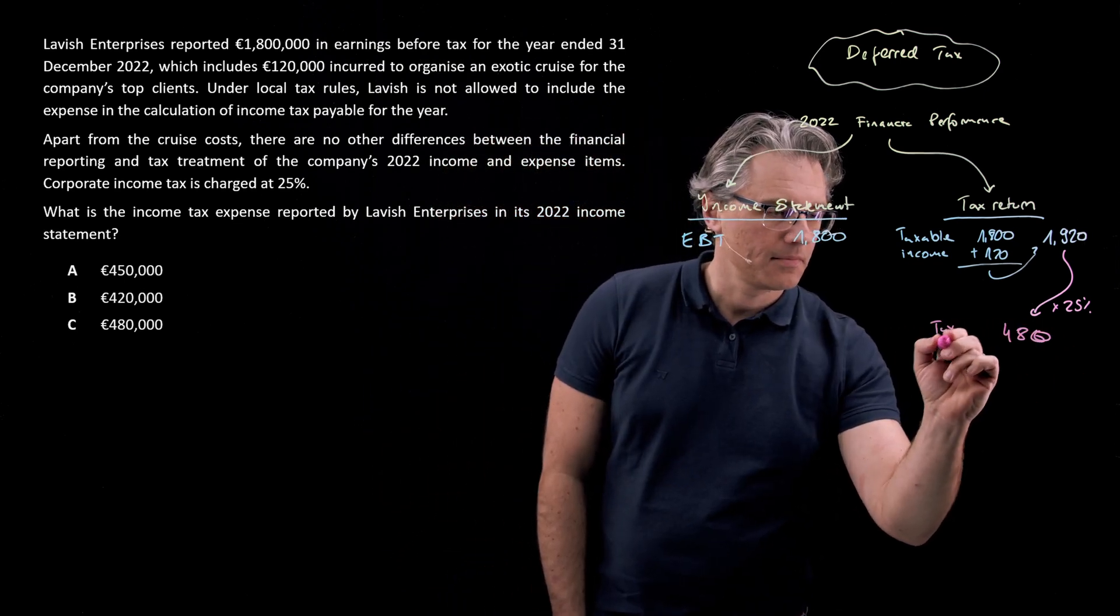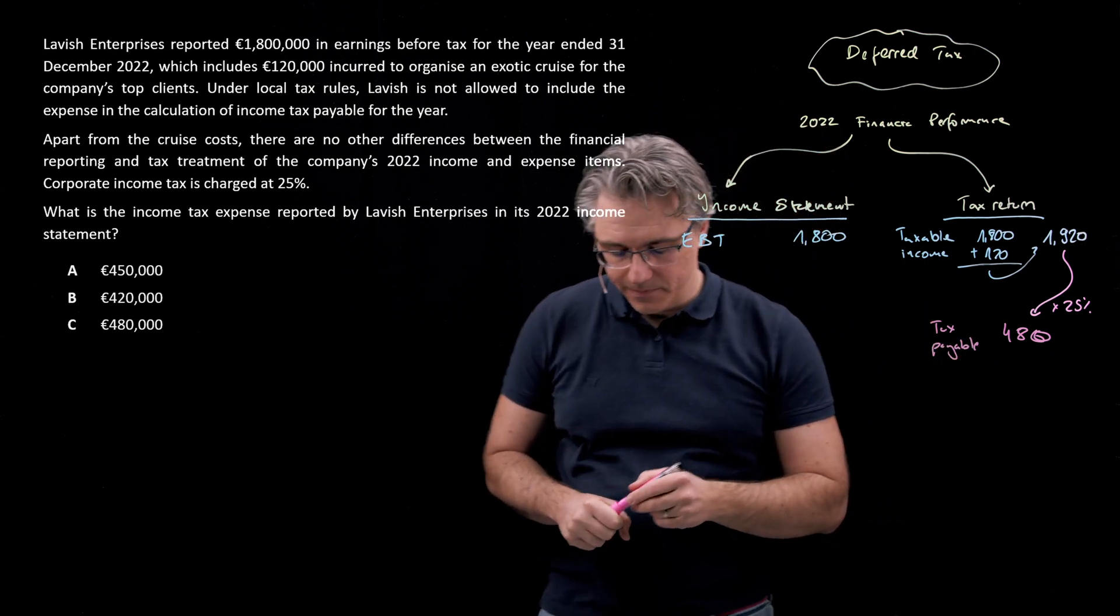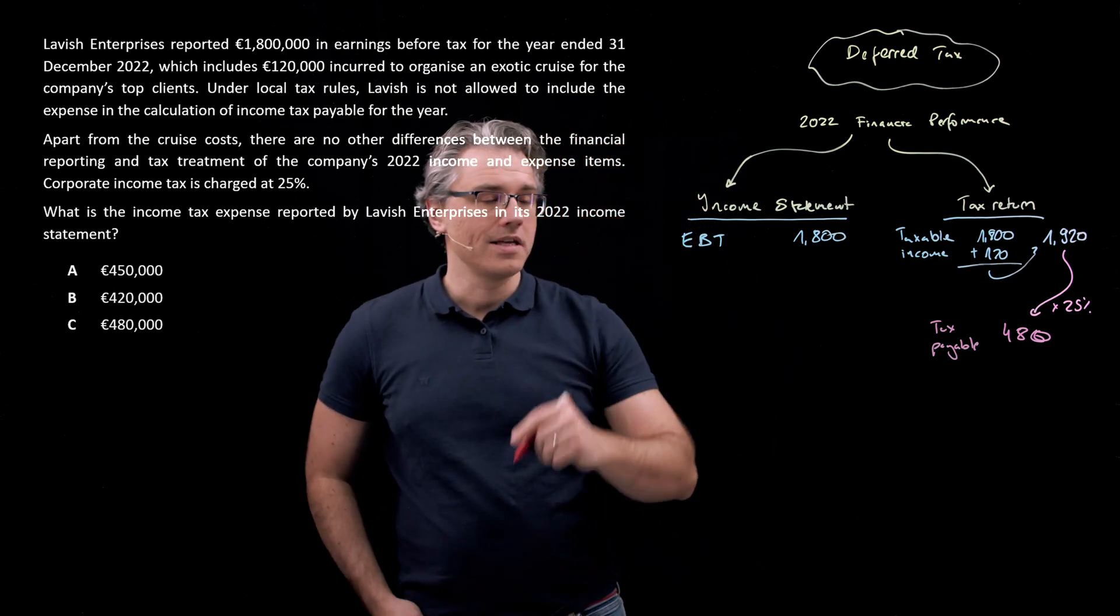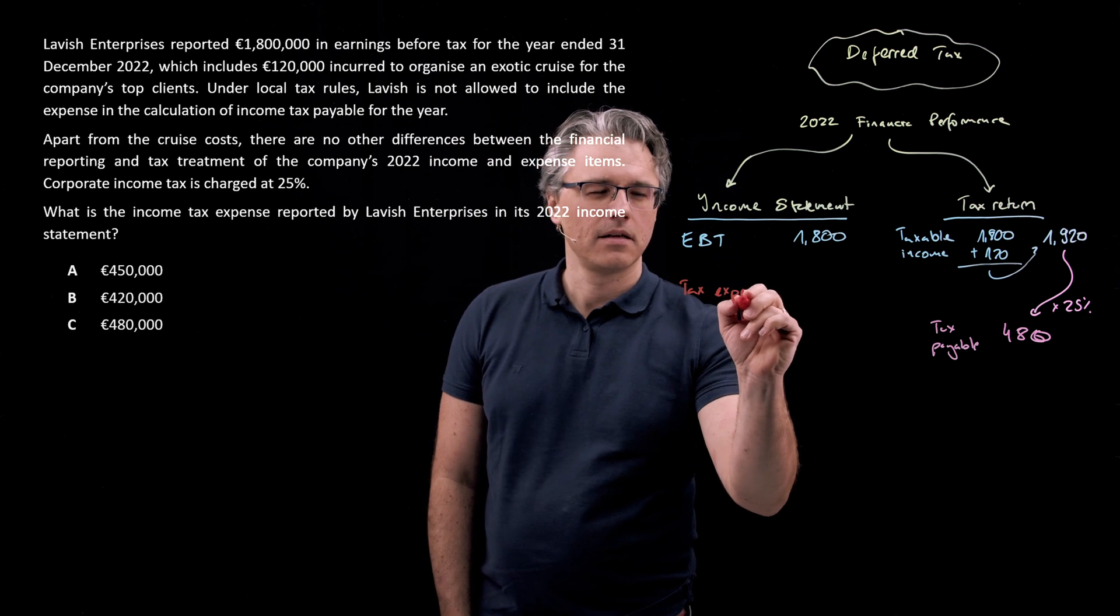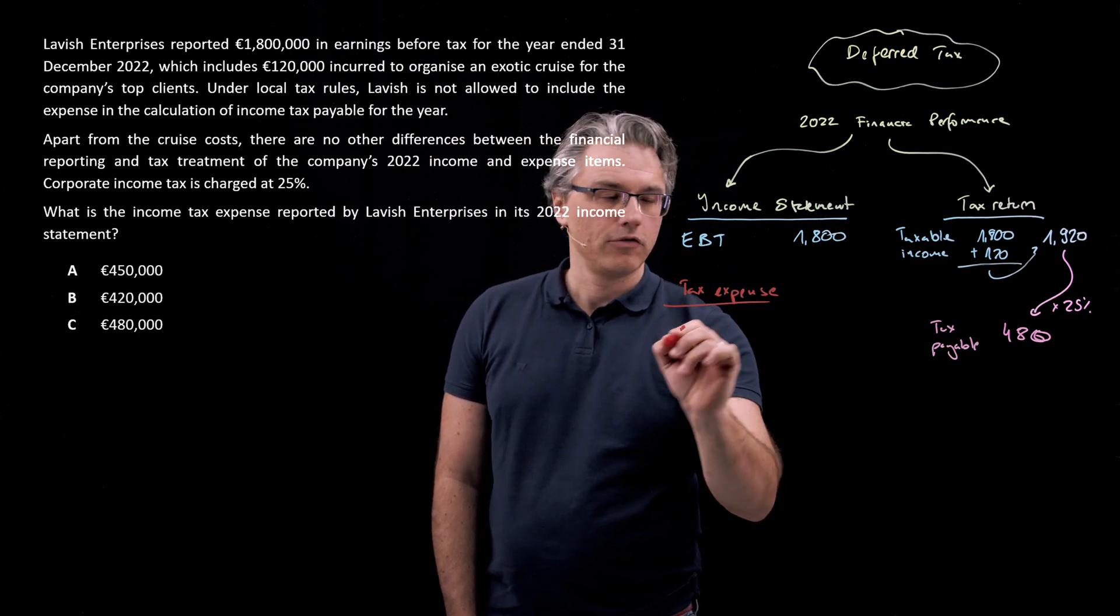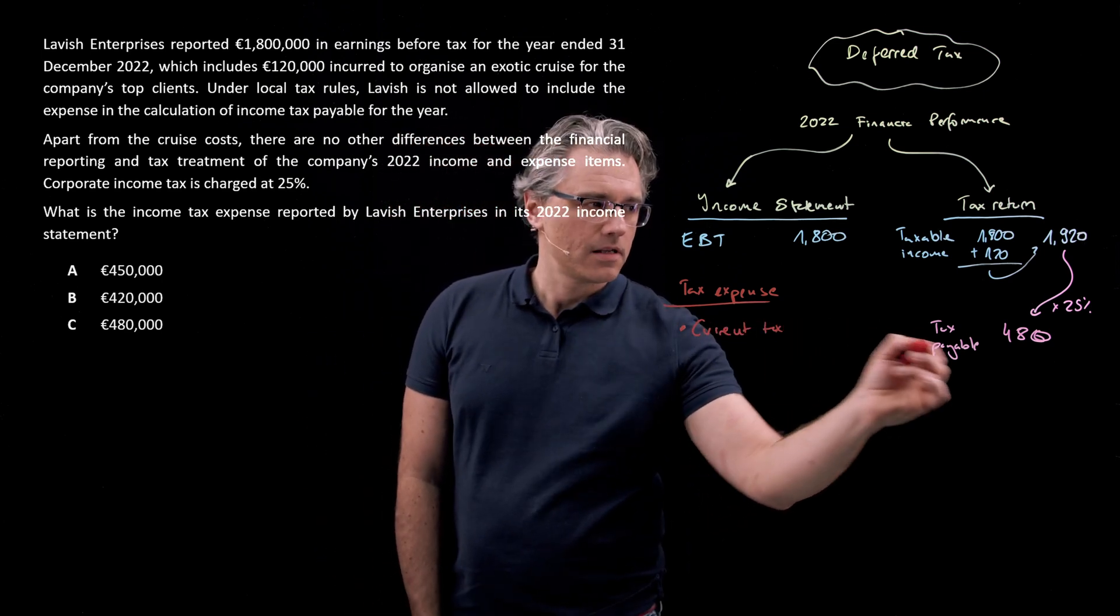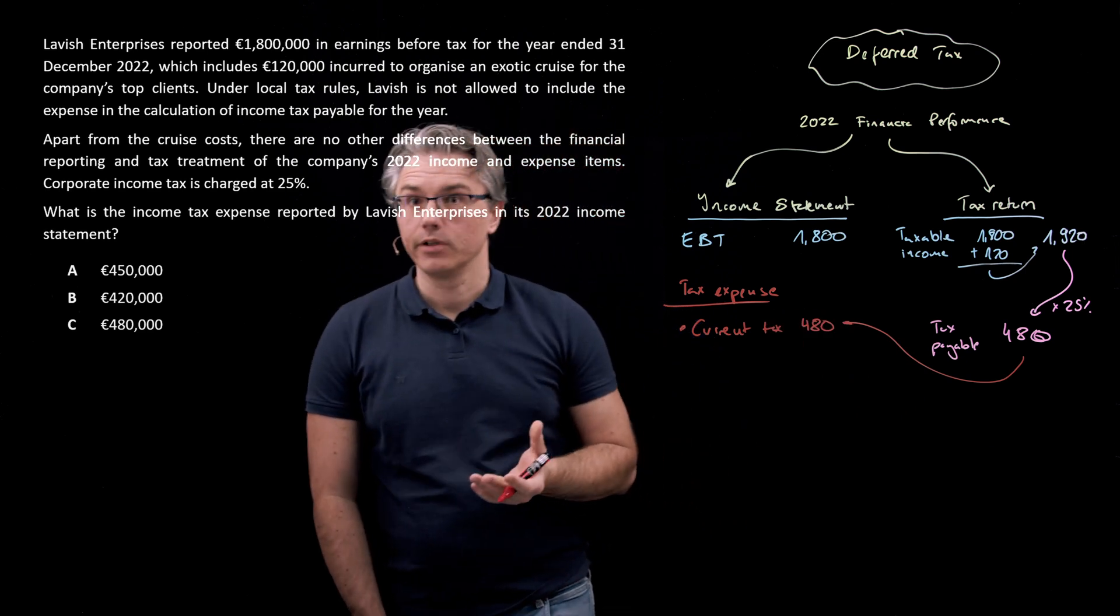So this is tax payable or income tax payable. And you know the story. This gets taken to our income statement over to the tax expense line. And it forms part, a component of the tax expense called current tax. So 480 enters over here.